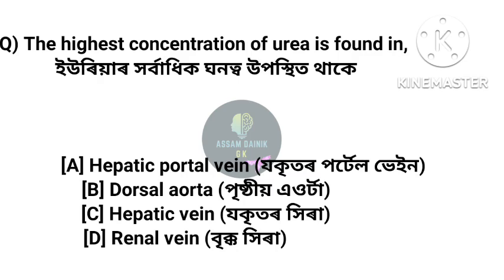The highest concentration of urea is found where? Urea horbadi khonato uposthi thake. The answer is option C: Haptic vein (hepatic vein).